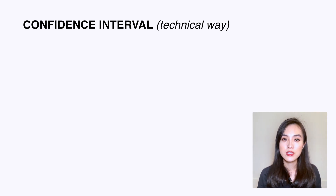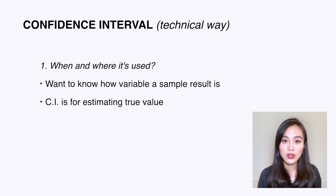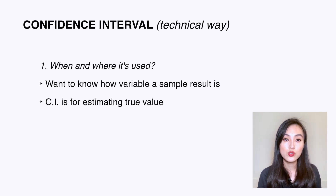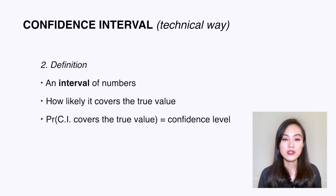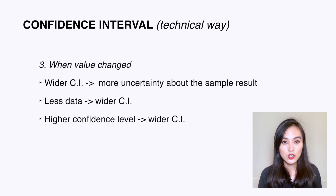The next concept is confidence interval. Confidence interval is used when we want to get an idea of how variable a sample result might be. It is for the true value, which we never actually know — the purpose of having samples and observations is to estimate it. The confidence interval is a range of numbers that tells us how often it would contain the true value. The probability of it covering the true value is the confidence level; a commonly used value is 95%.